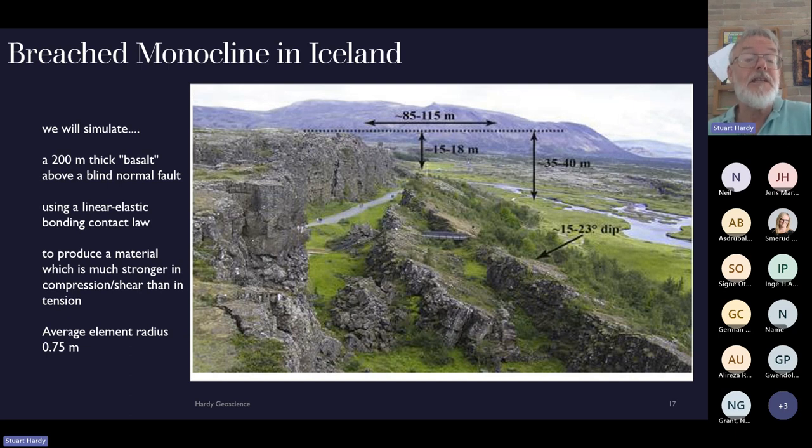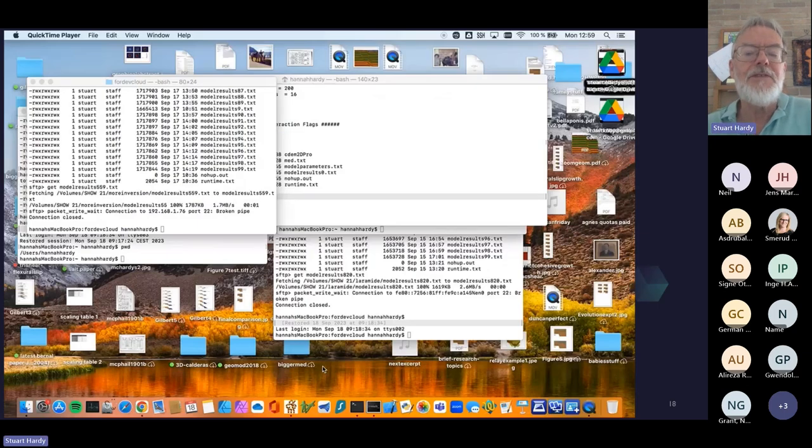We have a fissure here. We have a breached monocline terminology. When I look at the width of this fissure, the offset and we have a dipping surface here. The question is, can we simulate something? This is actually quite a difficult thing to simulate normally, numerically. You have gaps, you have open gaps, you have fissures. So we're going to simulate here 200 meter thick basalt above a blind normal fault, which is the scenario that has been suggested here. We're going to use a linear elastic contact law, which produces a material which is a lot stronger in compression and shear than in tension. The average element radius is three quarters of a meter. So we're looking at very high resolution here.